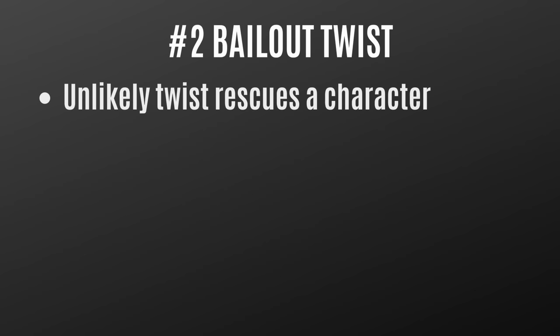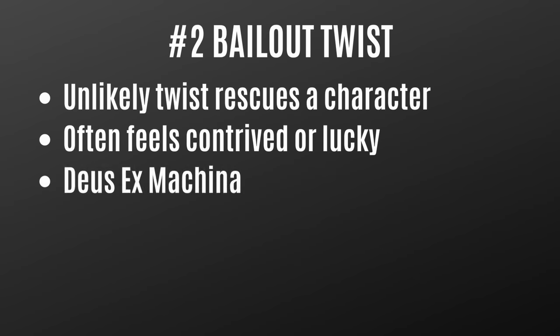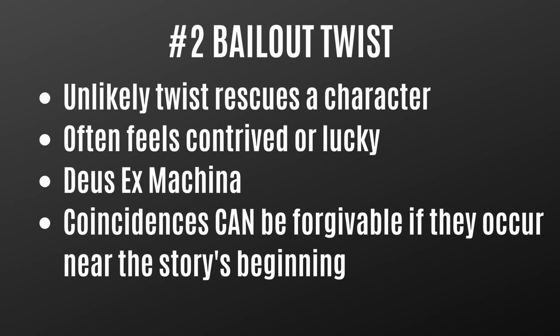The second type of bad twist is the bailout twist — an unlikely twist that rescues characters from deadly situations. Often it feels contrived or lucky, and may involve deus ex machina, where instead of the characters saving themselves, they're saved by bad writing. Coincidences can be forgivable near the beginning of a story, but they're unforgivable if they happen toward the end at critical moments.